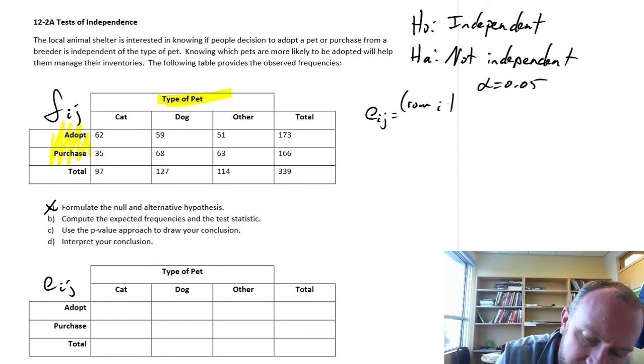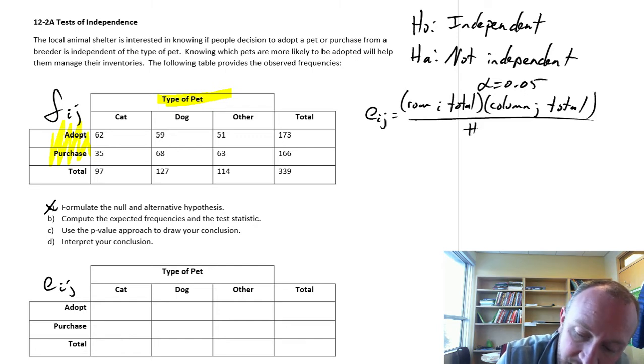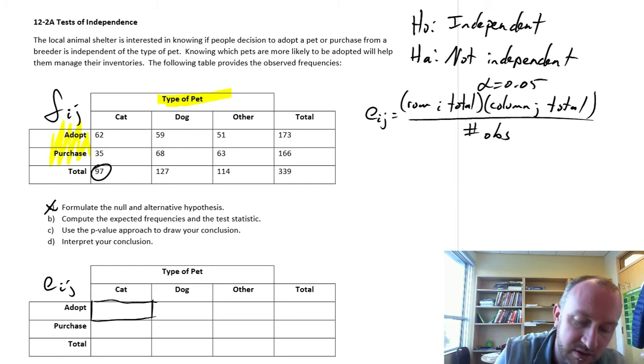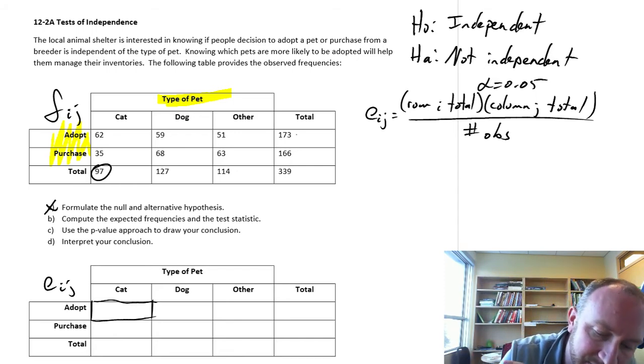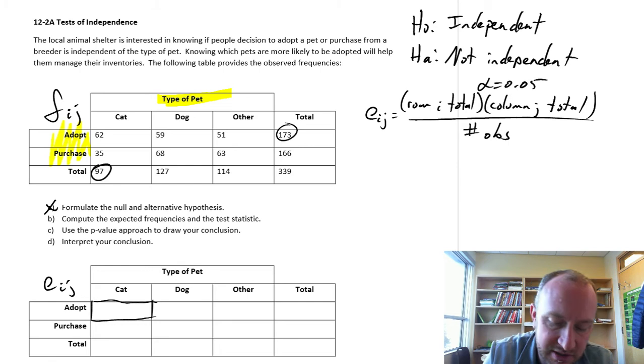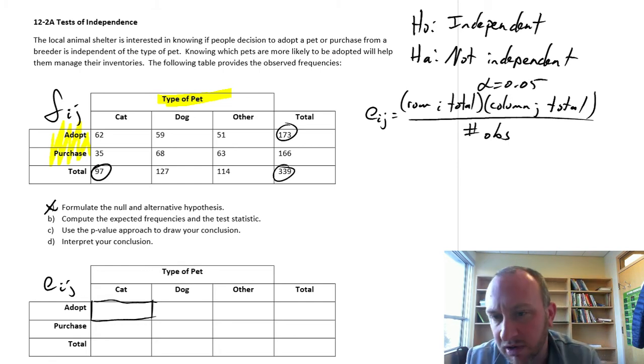It's the row totals multiplied by the column total divided by the total number of observations. So for this cell here, for example, that will be the total number of people who have a cat times the total number of adoptions divided by the total number of observations.